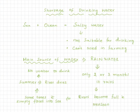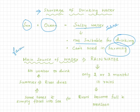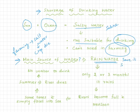Though 75% of the earth is covered by water, we still face water shortage. The reason is that only 2% of earth's water is good for drinking and irrigation purposes. We cannot use the saline water of oceans and seas for drinking, domestic, and agricultural purposes due to its high salt content.